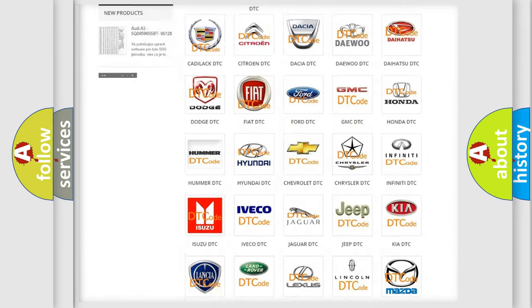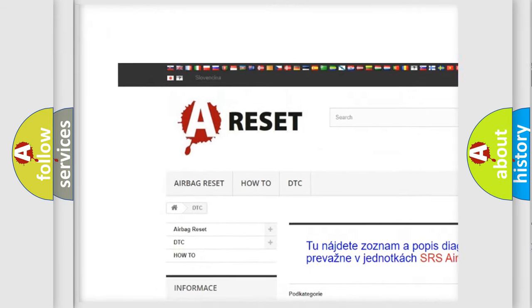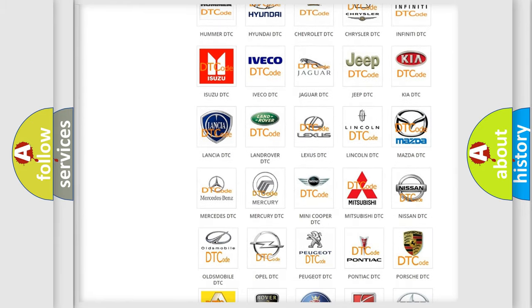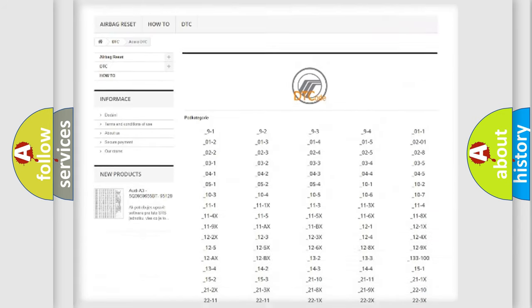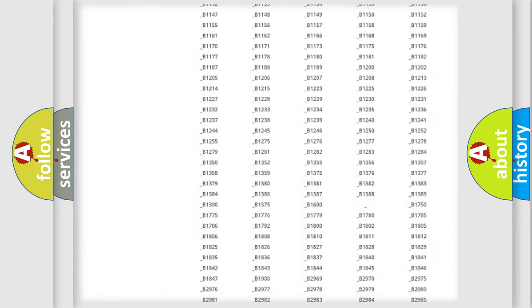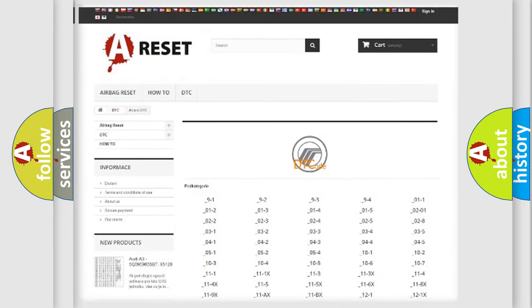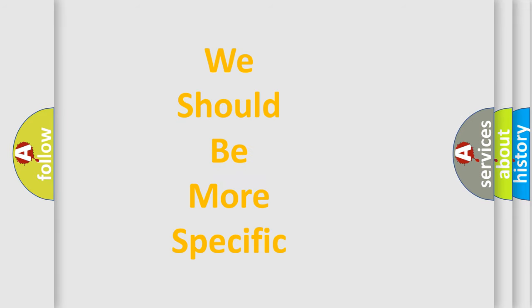Our website airbagreset.sk produces useful videos for you. You do not have to go through the OBD2 protocol anymore to know how to troubleshoot any car breakdown. You will find all the diagnostic codes that can be diagnosed in Mercury vehicles, and many other useful things. The following demonstration will help you look into the world of software for car control units.